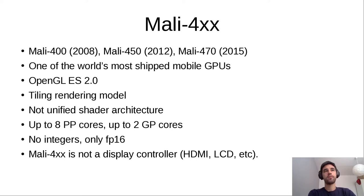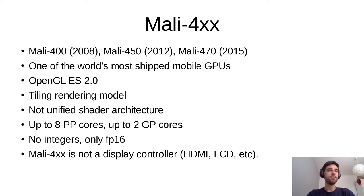The GPU does not have a unified shader architecture, which means we have different architectures for the vertex shader and the fragment shader. This shows the age of the GPU, because pretty much everything that came after this generation came with a unified shader architecture. For the driver, this has a serious implication: we need to maintain two different compilers — one for the vertex shader cores and one for the fragment shader cores. The hardware may come in different configurations with up to eight fragment shader cores and up to two vertex shader cores.